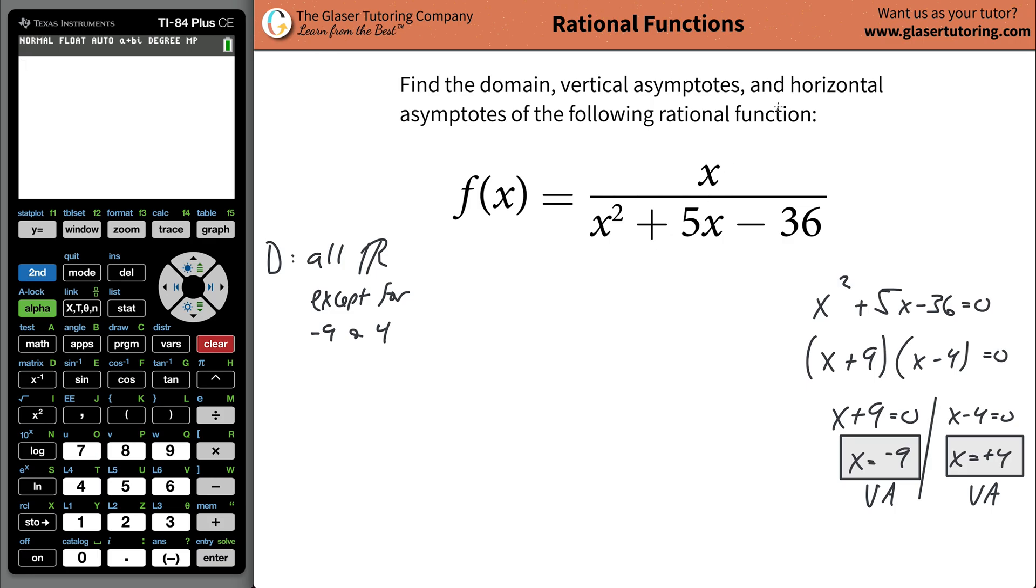Now, in terms of then the, so that takes care of the vertical asymptote. Next is the horizontal asymptote. When you do the horizontal asymptote, you have to kind of ask yourself two questions. Is the function top heavy, equal, equally heavy, or bottom heavy? And what we mean is we mean what are the powers of x and where is the highest power of x? Now, here, the highest power of x in the numerator is 1. Highest power of the denominator is 2. That's bottom heavy.